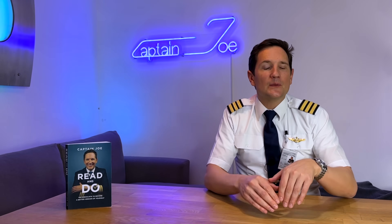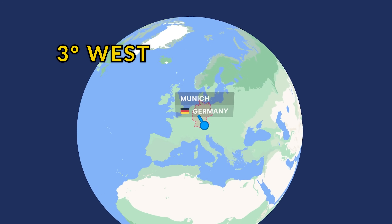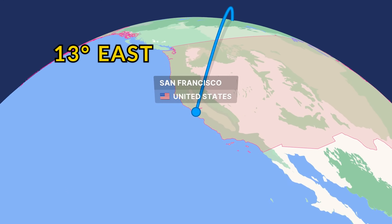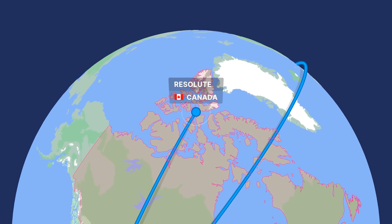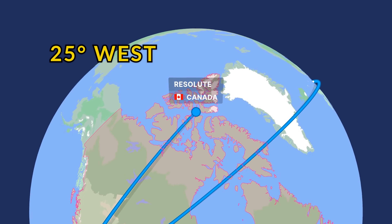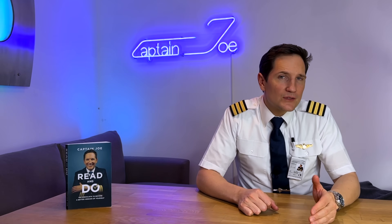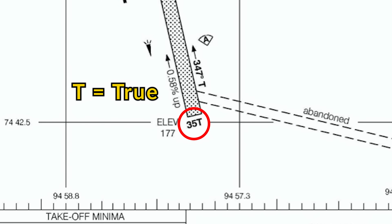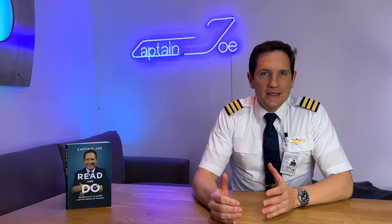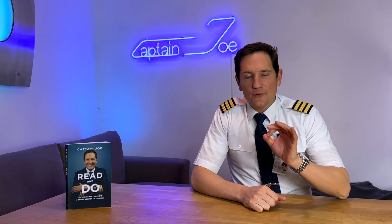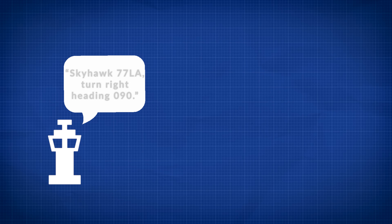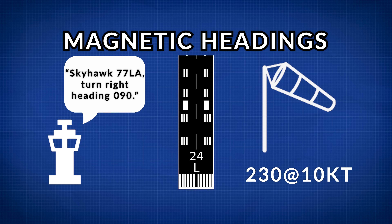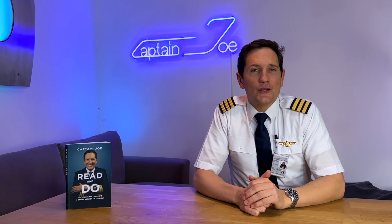My home base here in Munich has a magnetic variation of 3 degrees west. San Francisco has 13 degrees easterly variation. And Resolute Bay, up in the northwestern territories of Canada, has a whopping 25 degrees to the west — and because the magnetic error can be so severe, the runway there is aligned to be flown by a true heading. Because the magnetic heading can be derived quite easily with a magnetic compass, it is broadly used in aviation. Heading instructions by ATC, runway designations, and wind direction given by the tower are all magnetic headings — write that down, as this is a very common theory question.